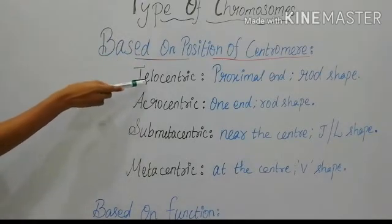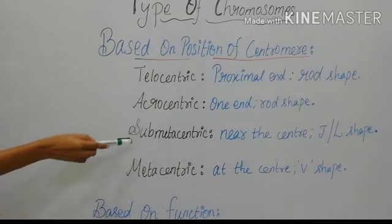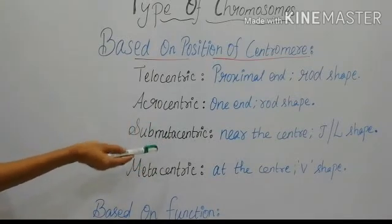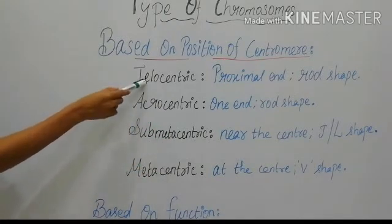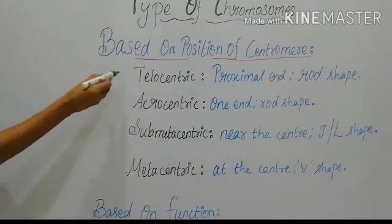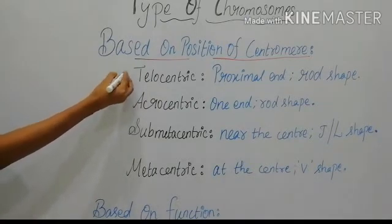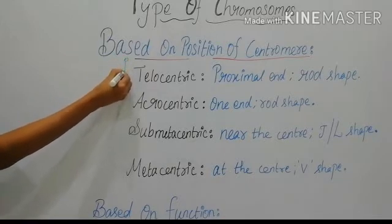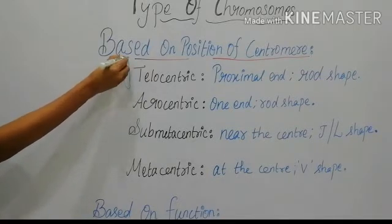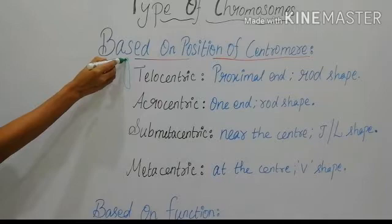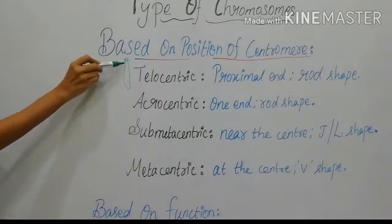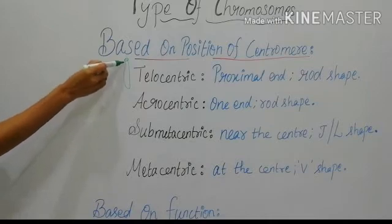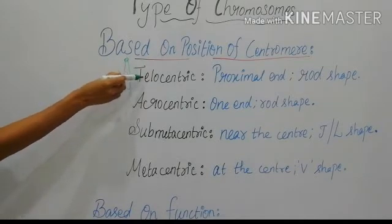The four types are telocentric, acrocentric, submetacentric, and metacentric. In telocentric, the centromere is present at the proximal end — that is, at the beginning. The chromosomes here are rod-shaped. This is the centromere, and this is the rod-shaped telocentric chromosome.